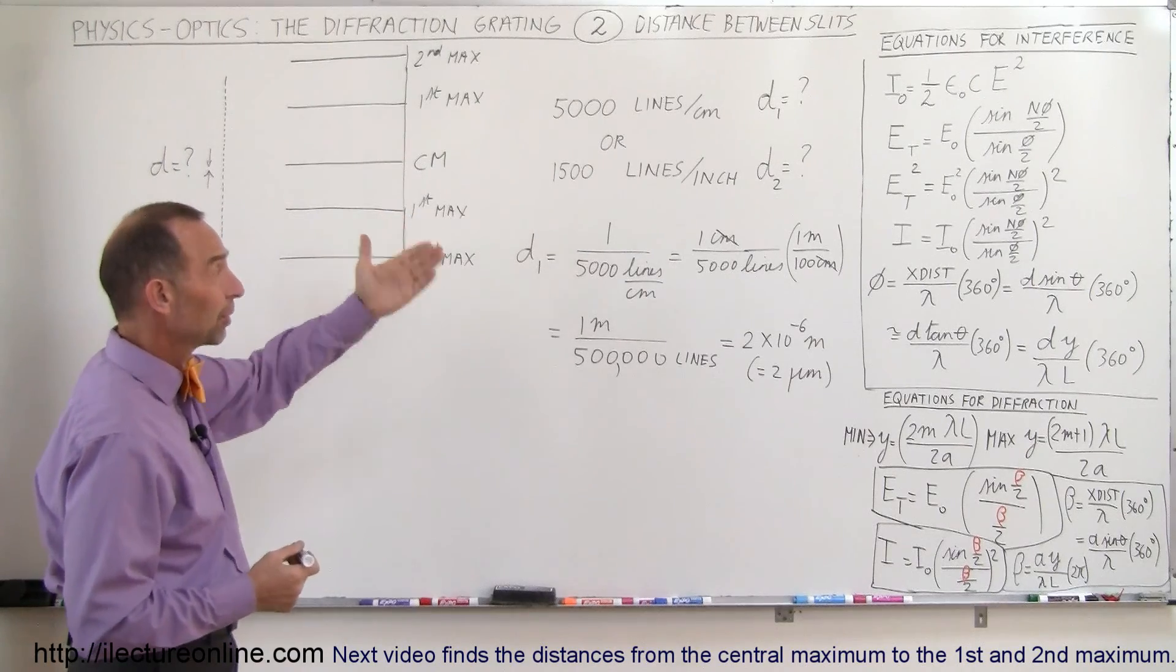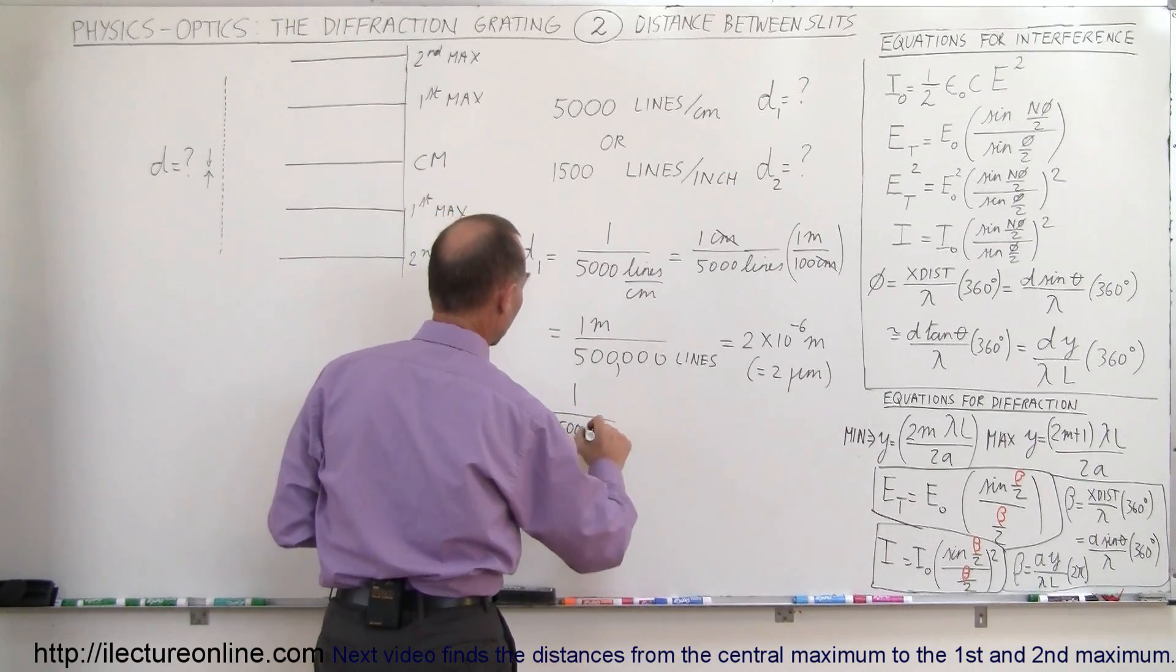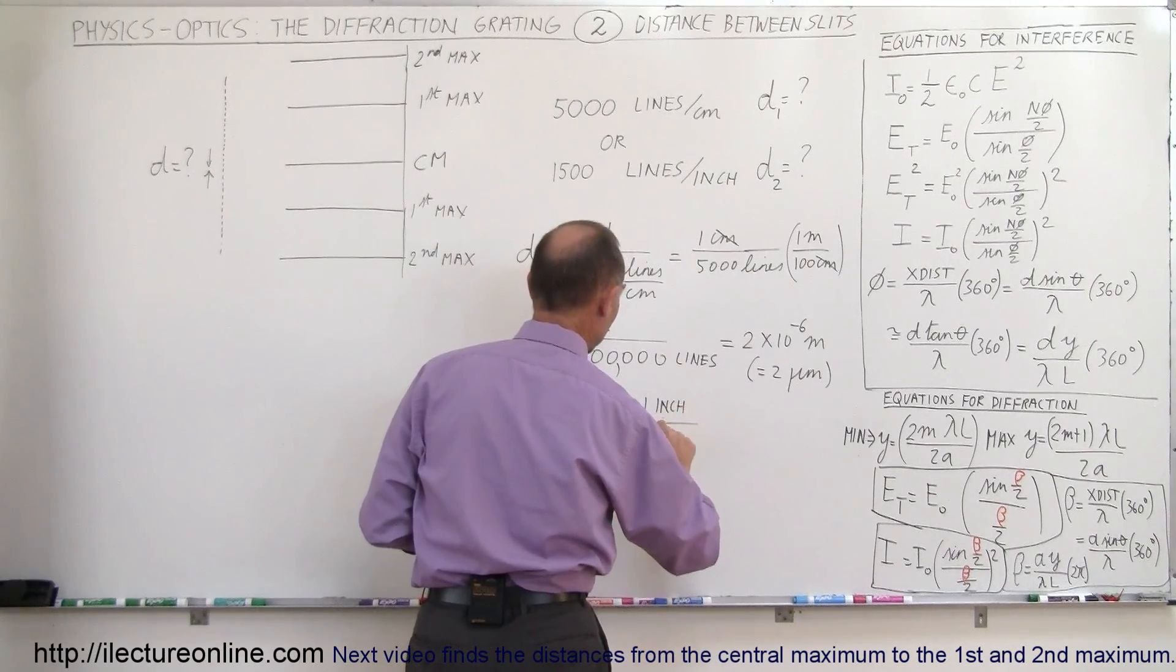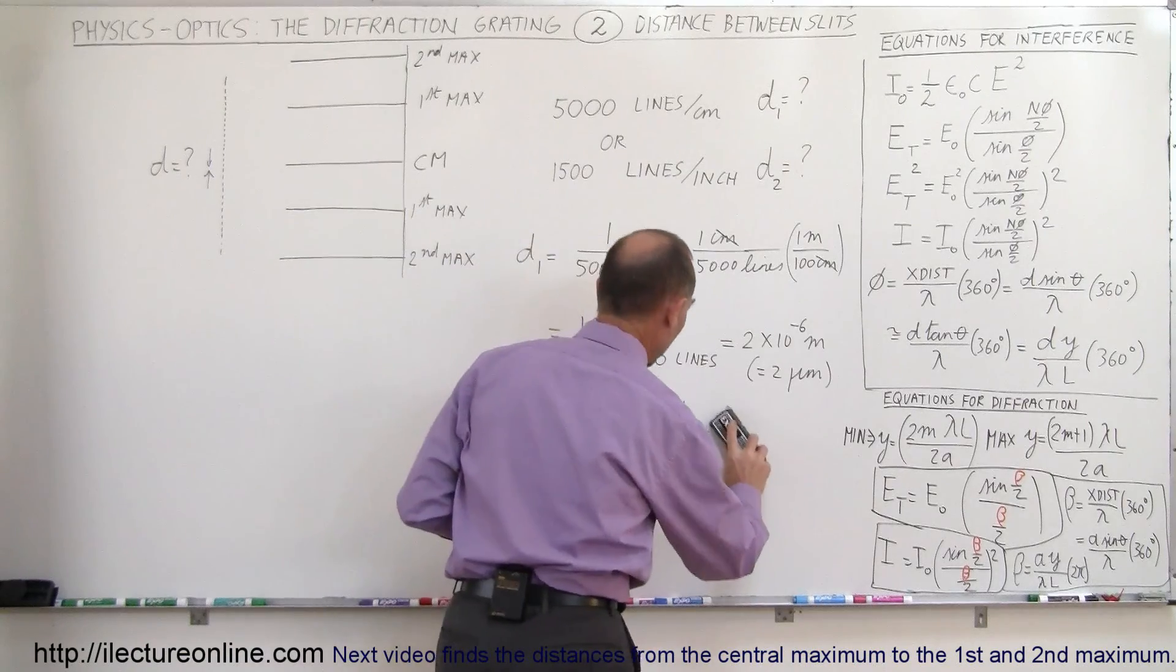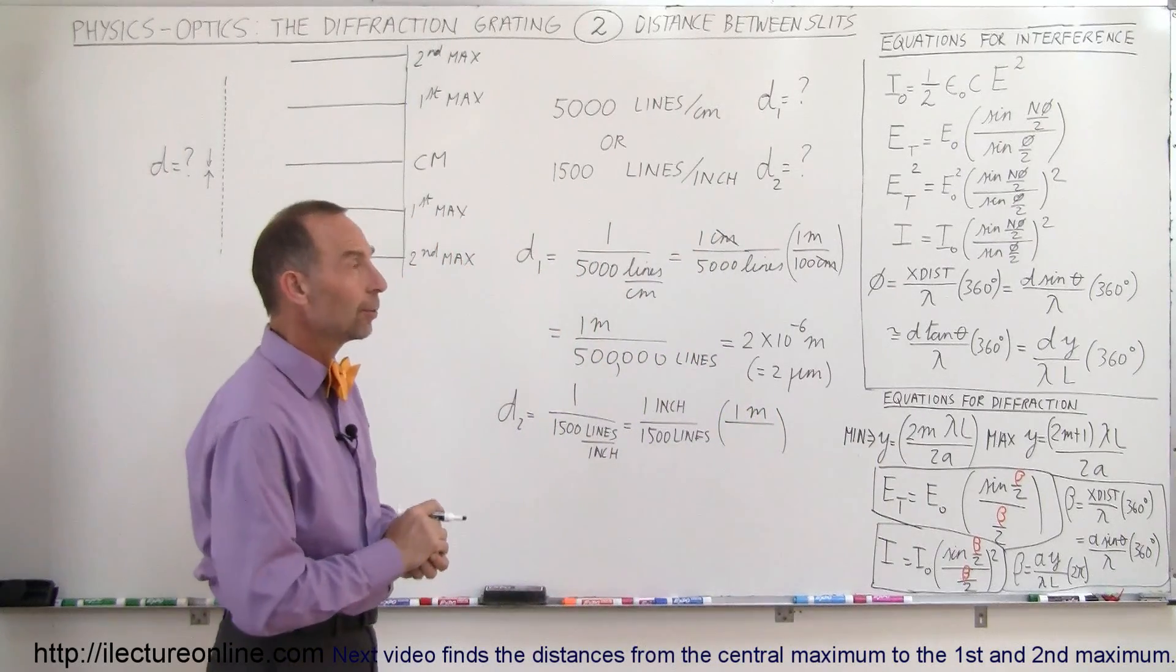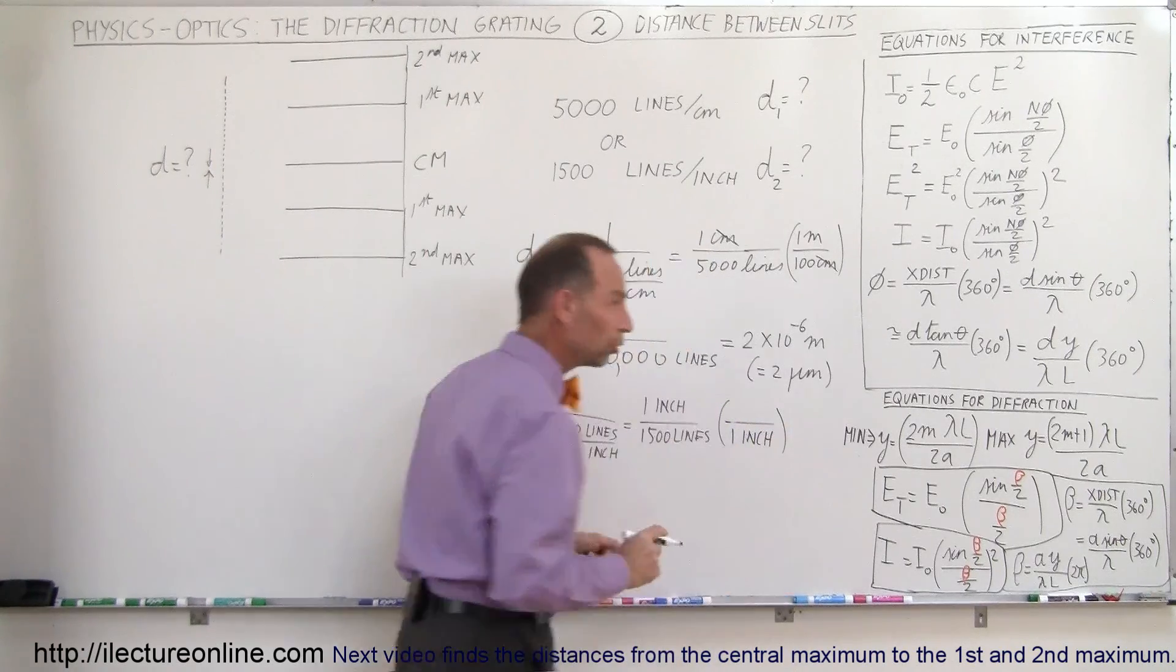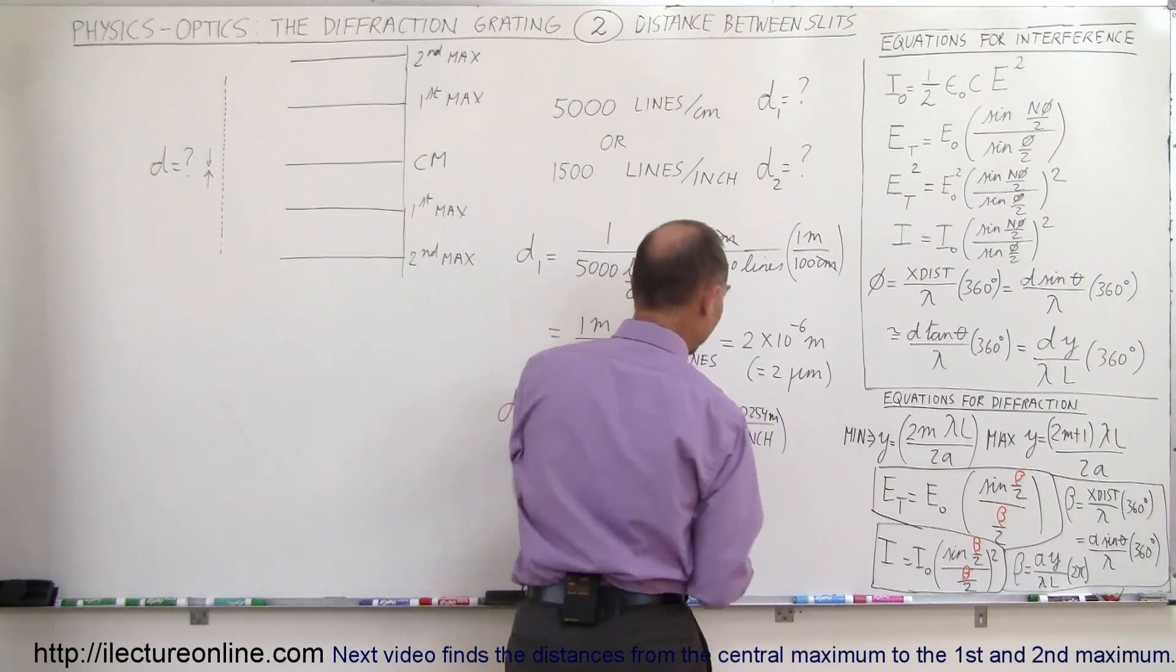Alright, how do we convert 1,500 lines per inch? Which means inches goes to the top, so we have 1 inch divided by 1,500 lines. And so now we have to convert that to meters instead of inches. So if we take 1 inch, which is equal to 2.54 centimeters and convert that to meters, we get 0.0254 meters. That's probably a better way to convert.